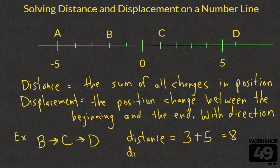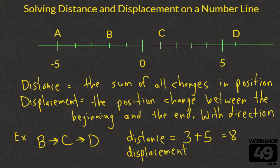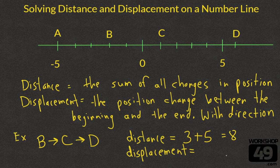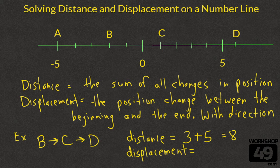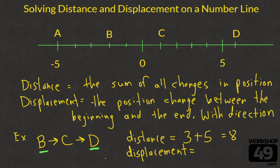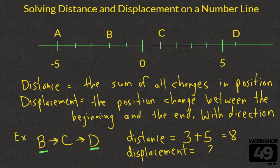Our displacement looks only at where we began and where we ended and tells us how far away we are and in which direction. We began at B, we ended at D. The total position change was 1, 2, 3, 4, 5, 6, 7, 8. It was 8, but it was to the right.